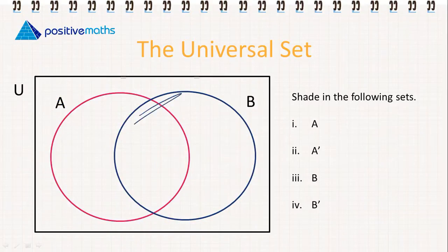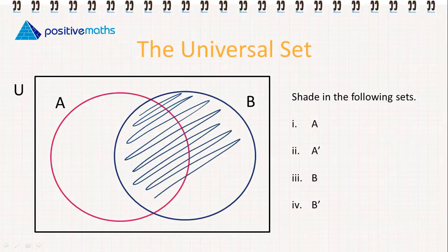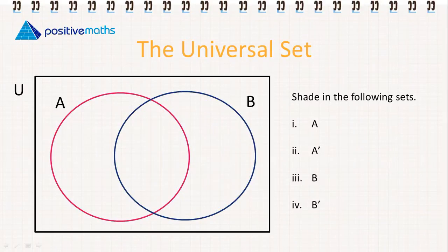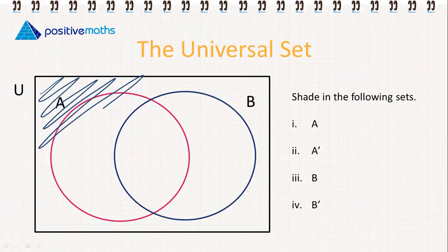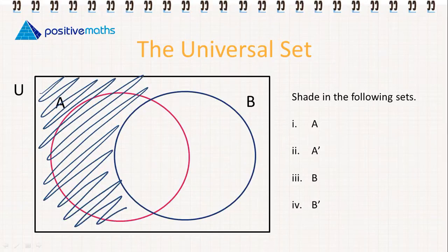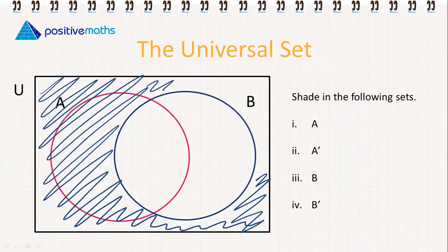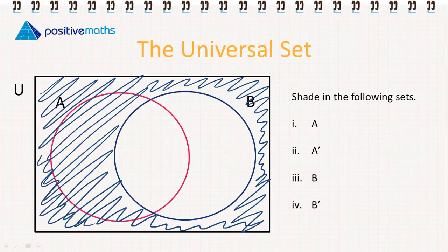Now we're going to shade in B, and finally the complement of B. So it's all of the elements in the universal set but not including any element that's in B.